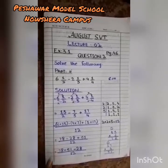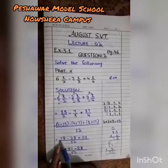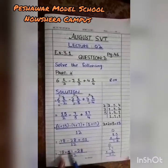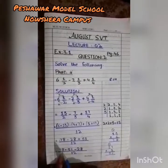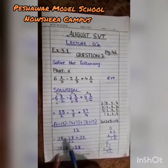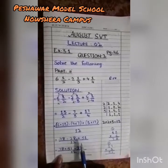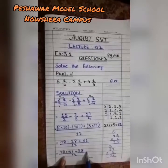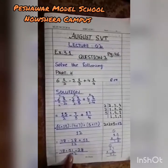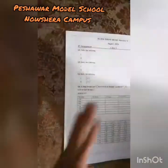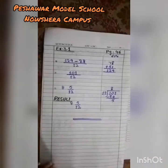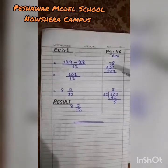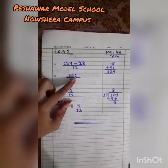Now, we first add the plus numbers together and then subtract. There is no sign before 78, meaning it has a hidden plus sign. So we group the plus numbers: 78 plus 51, and minus 28 is kept separate. 78 plus 51 gives 129. Then 129 minus 28 gives 101.